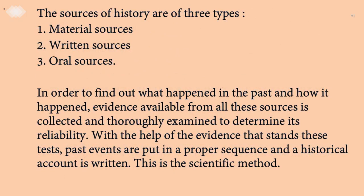The sources of history are of three types: first, material sources; second, written sources; third, oral sources. In order to find out what happened in the past and how it happened, evidence from all these sources is collected and thoroughly examined to determine its reliability. With the help of evidence that stands these tests, past events are put in proper sequence and a historical account is written. This is the scientific method.